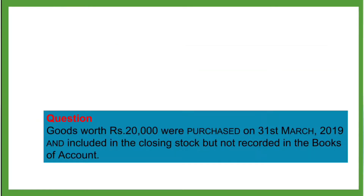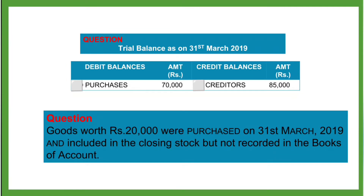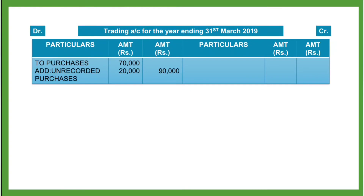Now we will see how to record this entry in the final account and how a question can be asked. In a trial balance, on the debit side there will be an entry of purchases and on the credit side an entry of creditors. The adjustment will be asked as: goods worth Rs. 20,000 were purchased on 31st March 2019 and included in the closing stock but not recorded in the books of accounts.